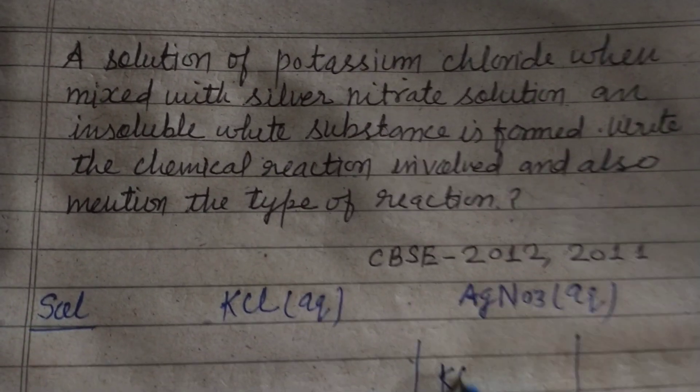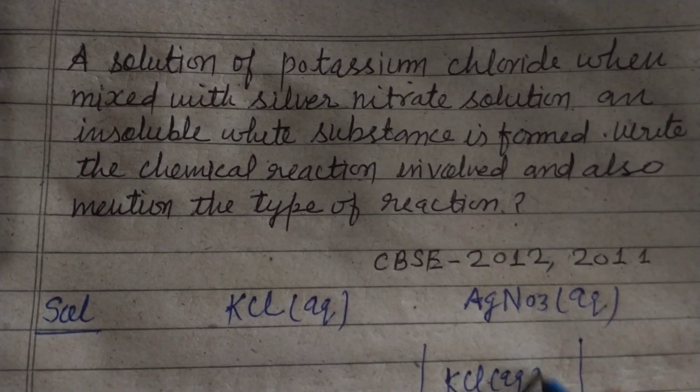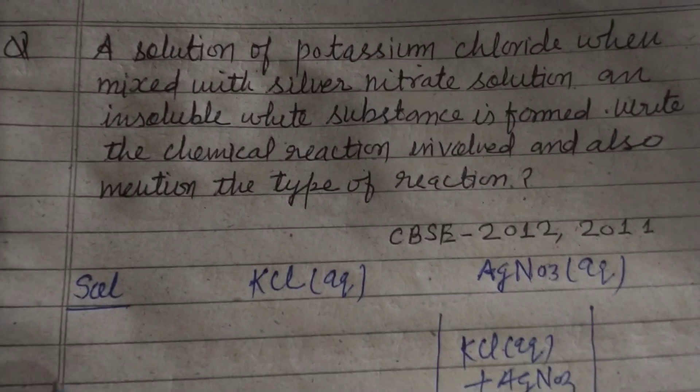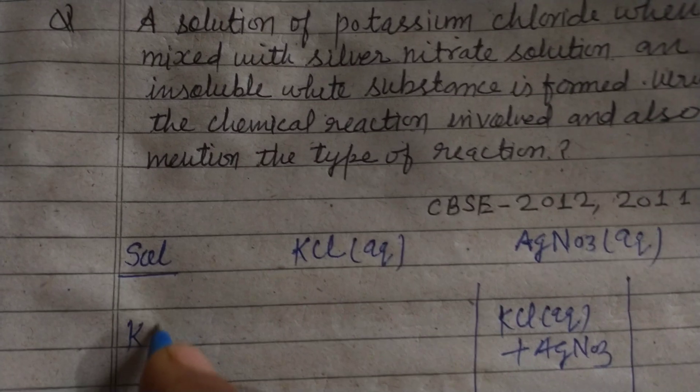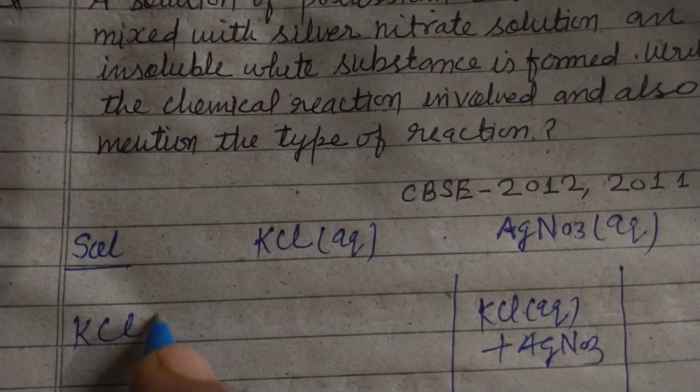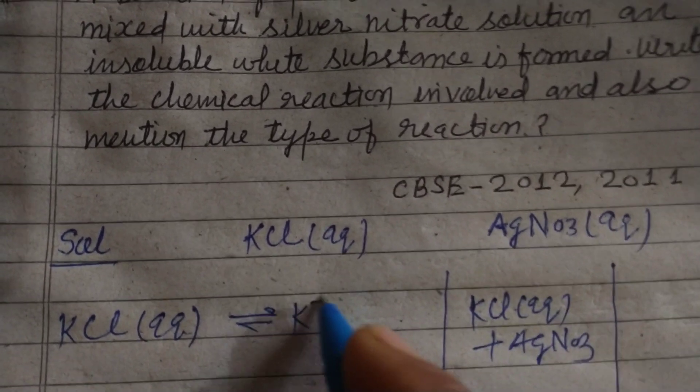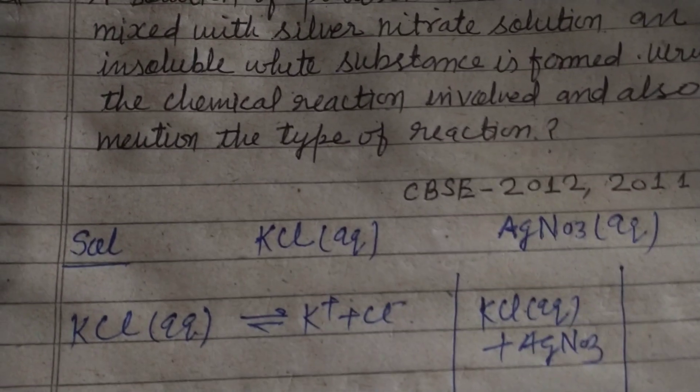So when we put them in a container, KCl plus AgNO3, the reaction happens in this way that KCl aqueous breaks into K plus and Cl minus.